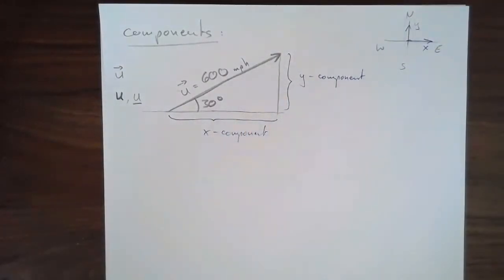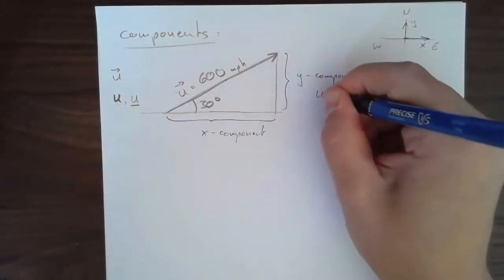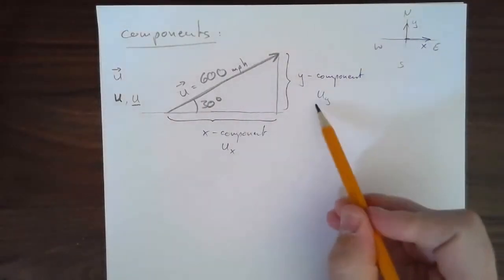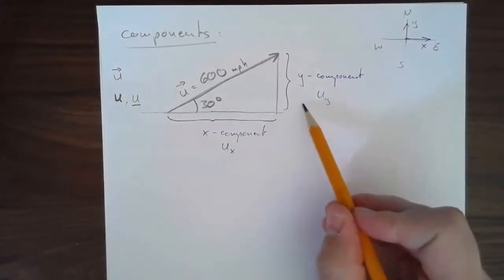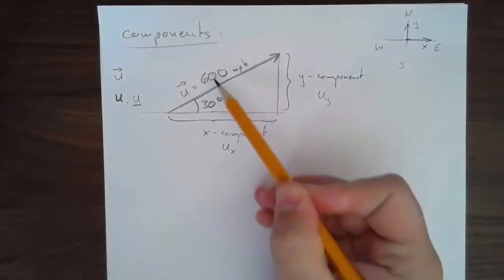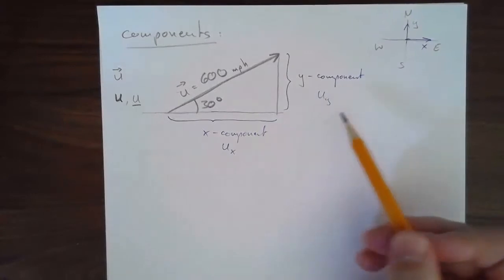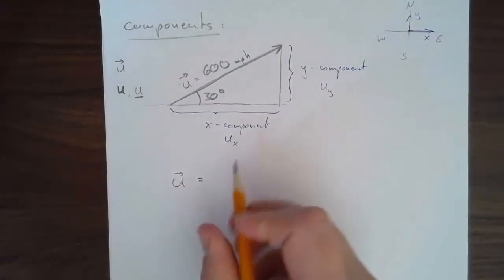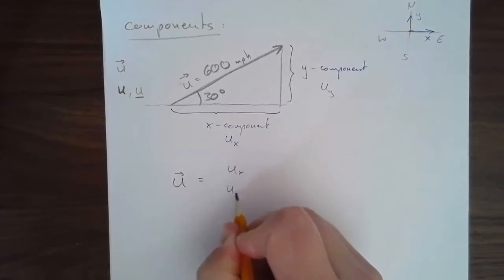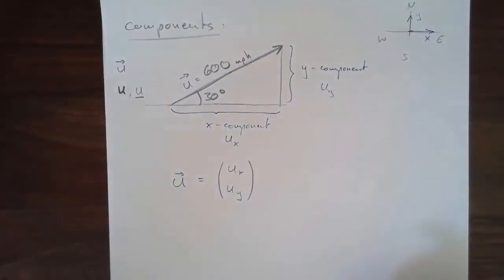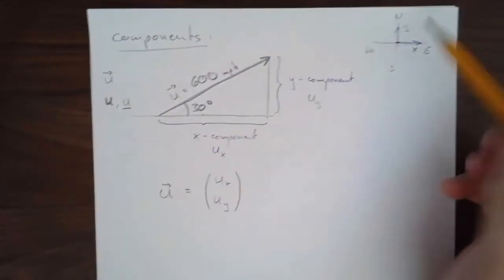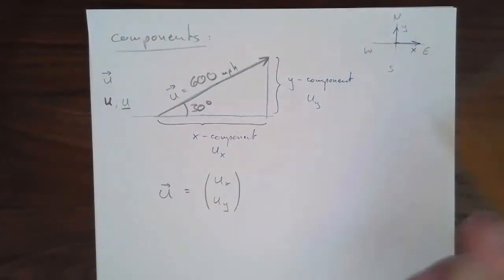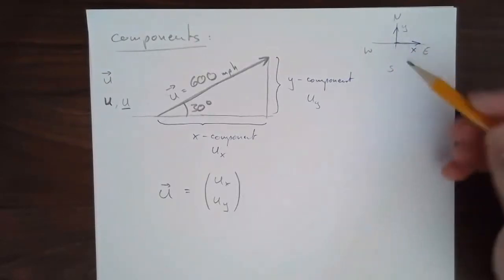Let's find the two components. I'll call them u subscript y and u subscript x. Notice that the x and y components are not vectors themselves — they are just numbers that together uniquely define what that vector is, so they don't get little arrows. I can write vector u as consisting of an x component and a y component. If this were a vector in three-dimensional space — north-south, west-east, and also coming out of the page — I'd give it a z component as well.